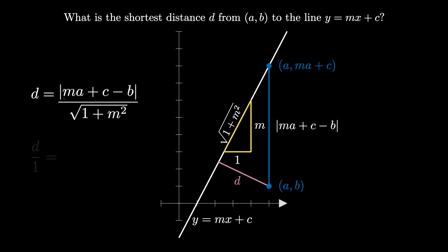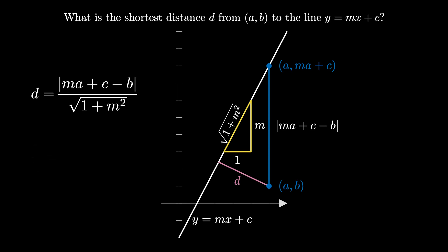But d over 1 is just d, and so this means we have computed the distance of the shortest line segment connecting a, b to the line y equals mx plus c.